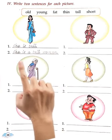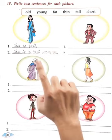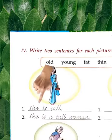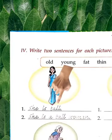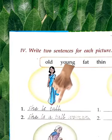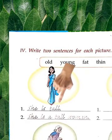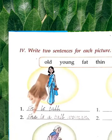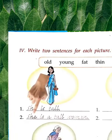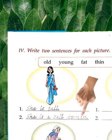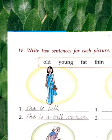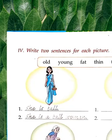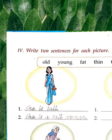What is she? She is tall. So the first sentence is: 'She is tall.' And the second sentence is: 'She is a tall woman.'